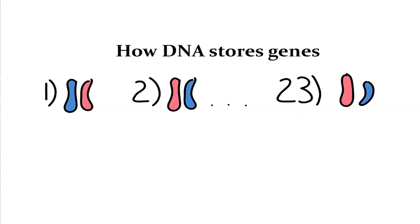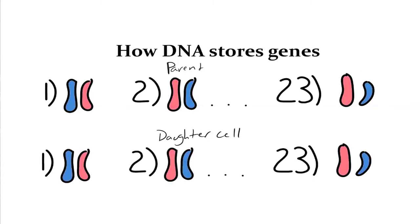We're about to go through the steps of mitosis and meiosis. Knowing what we've talked about: what is going to be the result of this DNA in mitosis versus meiosis? Well, in mitosis you're copying the parent cell, so whenever this cell divides it's going to have exact copies of the DNA as well. We call the original the parent cell, and the ones that come from it are daughter cells.